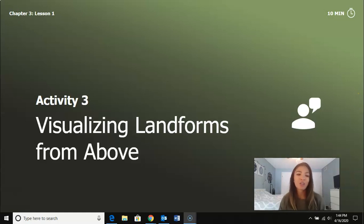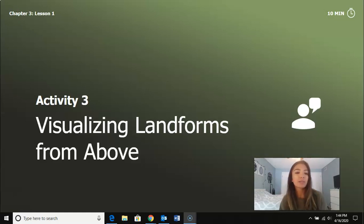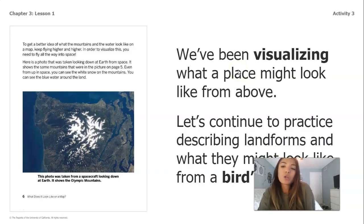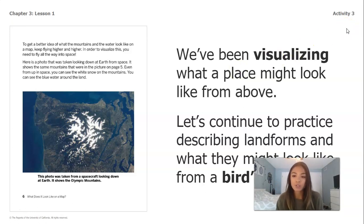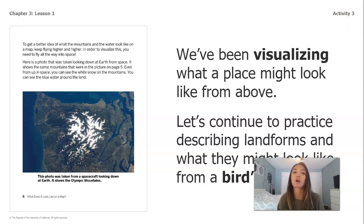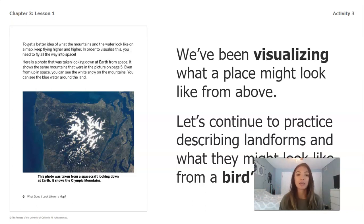All right guys, so we are on our last activity for lesson one today for chapter three, and we're going to be visualizing landforms from above. We've been visualizing what a place might look like from above and we're going to continue to practice describing landforms and what they might look like from a bird's eye view — looking at it from higher up, kind of like in the picture we see over here to the left.